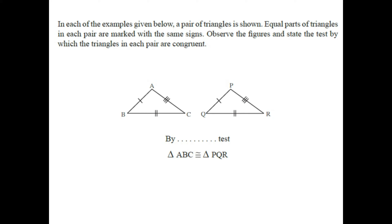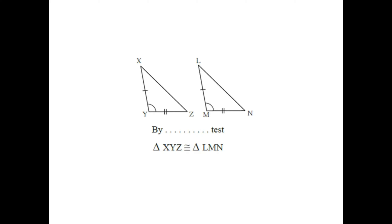Side AC is congruent to side PR. Since only sides are involved, these two triangles are congruent by the SSS test. For the next example, triangles XYZ and LMN — two sides and the angle between them of triangle XYZ are congruent with two corresponding sides and the included angle of triangle LMN, so these two triangles are congruent by the SAS test.